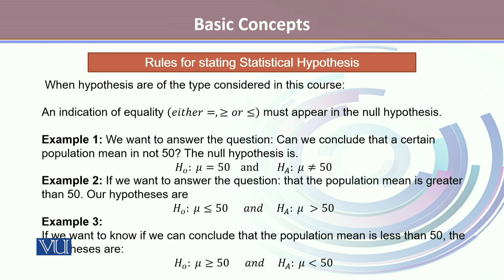One important factor to always consider is the indication of equality. The sign of equal, greater than or equal, or less than or equal must appear in the null hypothesis. For example, to answer the question 'Can we conclude that a certain population mean is not 50?', the null hypothesis will be H0: μ = 50, where μ represents the mean, against the alternative hypothesis that μ ≠ 50. This 'not equal to 50' comes directly from the statement given in the example.